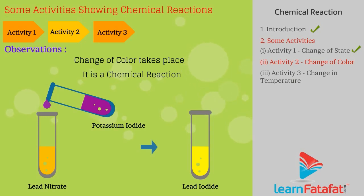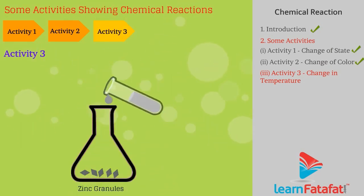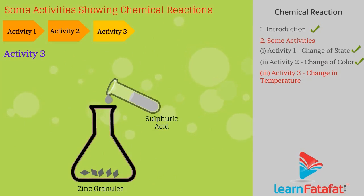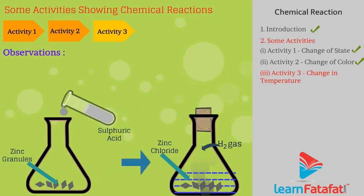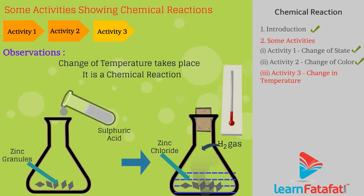Activity three: Take some zinc granules in a conical flask or test tube and add dilute hydrochloric acid or sulfuric acid. Zinc chloride and hydrogen gas are formed. Here, zinc reacts with dilute sulfuric acid to give zinc chloride and H2 gas. Gas is evolved and a change in temperature takes place, specifying it is a chemical reaction.